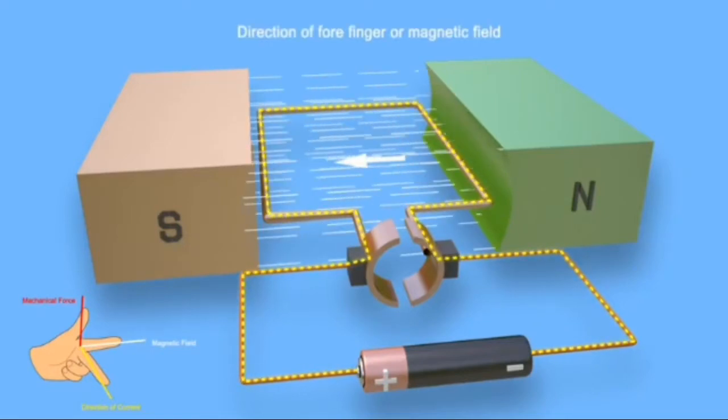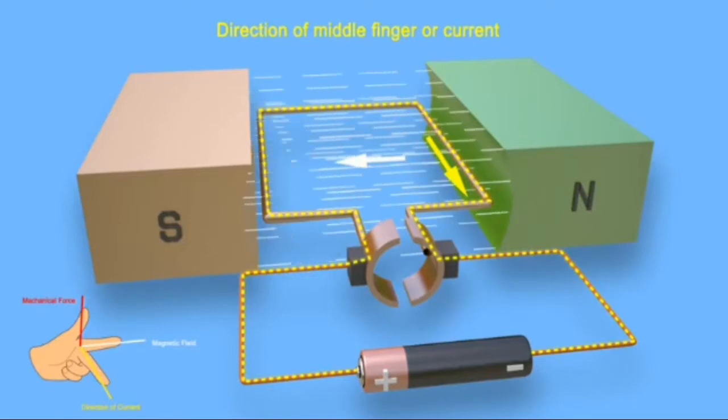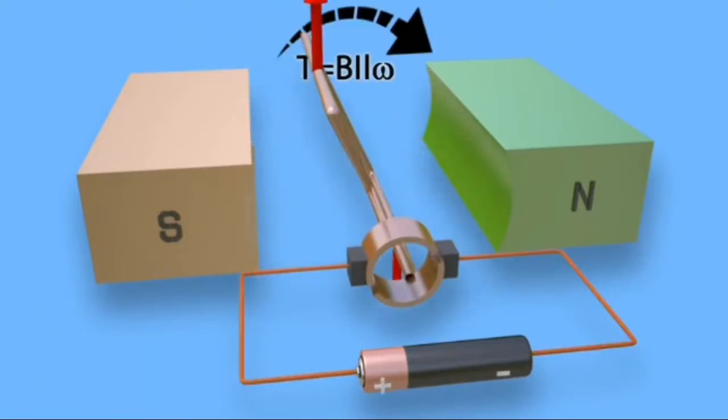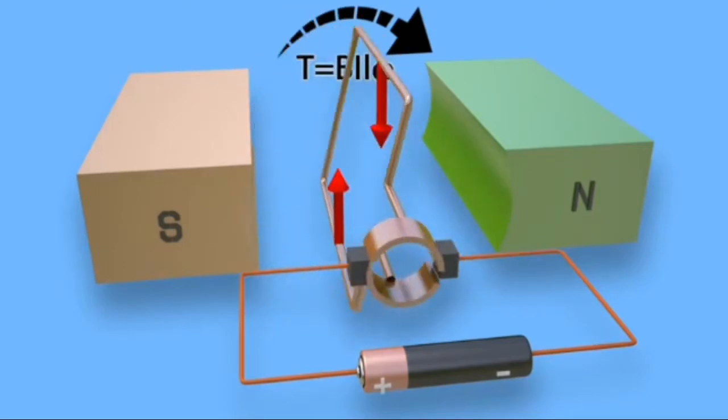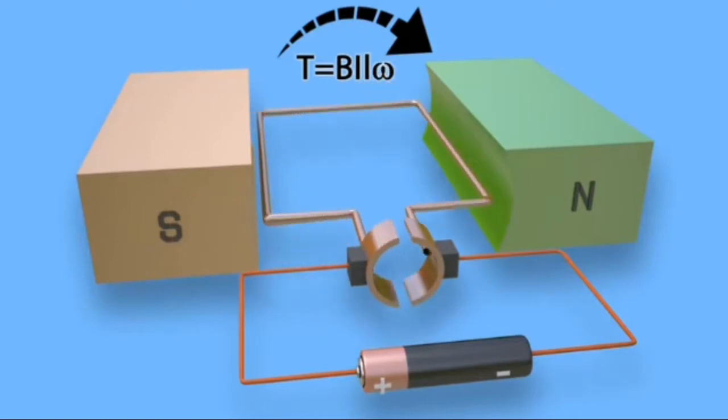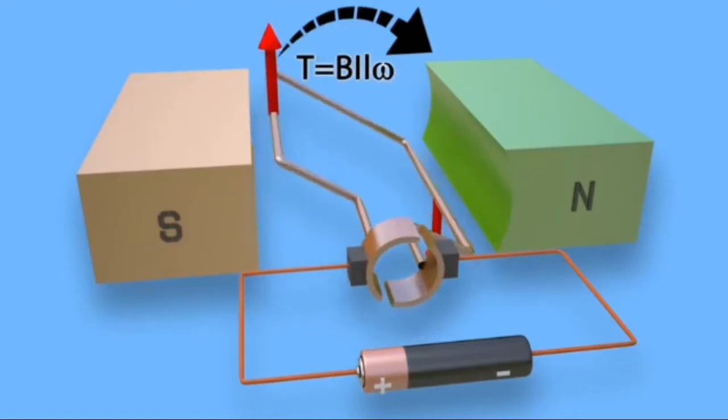Similarly, if the forefinger is aligned along direction of magnetic field from north pole to south pole, and second finger is aligned along direction of the current in right side conductor, then thumb indicates direction of mechanical force. Due to these upward and downward forces on the turn, a torque is produced and the turn rotates in clockwise direction as shown.